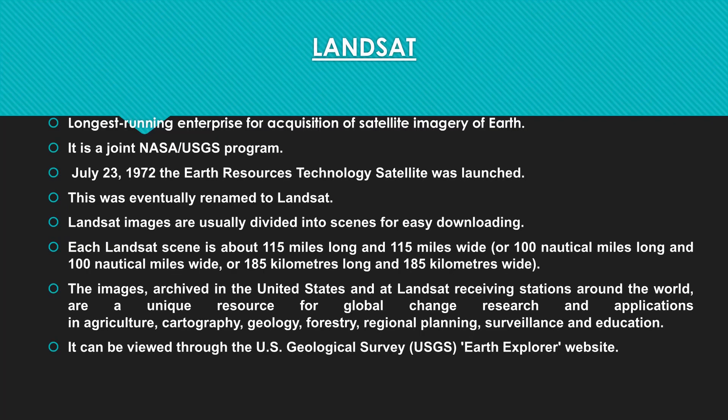The Landsat series is basically the longest running enterprise for acquisition of satellite imagery of Earth. It started with Landsat 1, and recently Landsat 9 was launched in 2021. Landsat is a joint NASA-USGS program. The first Landsat satellite was launched on July 23, 1972. It was earlier named Earth Resource Technology Satellites and was eventually renamed Landsat. The entire series data can be downloaded from the Earth Explorer USGS website.